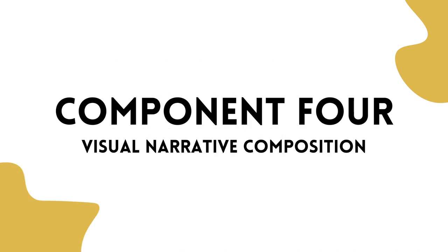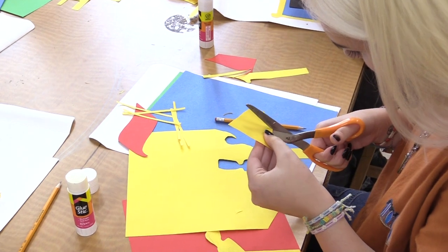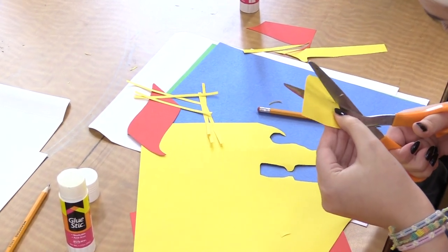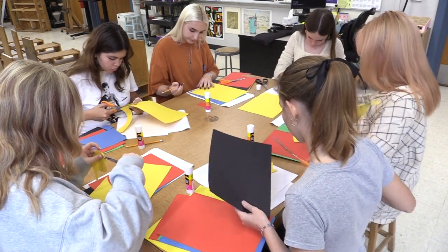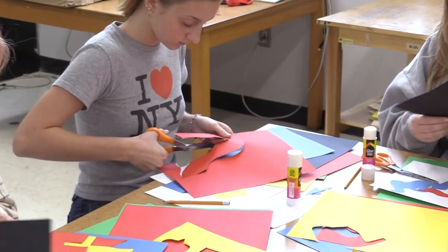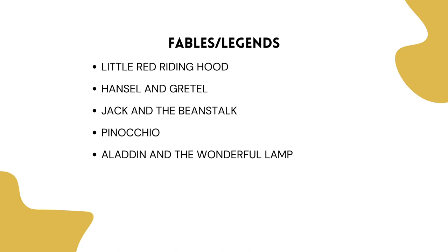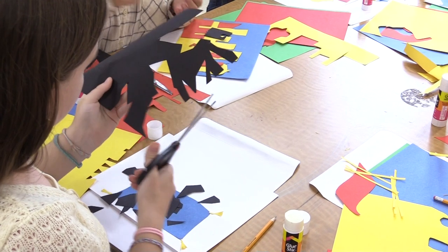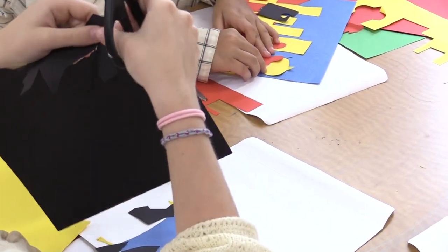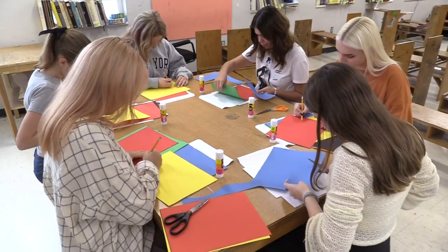Component 4: Visual Narrative Composition. At the live, in-person portion of their audition, applicants will create a visual two-dimensional design based on a narrative using colored paper, scissors, and glue. The applicant will create their composition based on fables and legends, which could include Little Red Riding Hood, Hansel and Gretel, Jack and the Beanstalk, Pinocchio, and Aladdin and the Wonderful Lamp. The exact one they will have to base their design on will be announced at their live audition. Applicants should familiarize themselves with all five fables and legends listed.